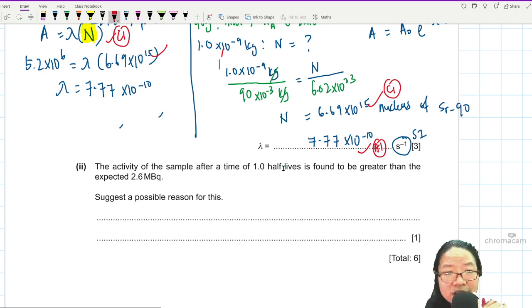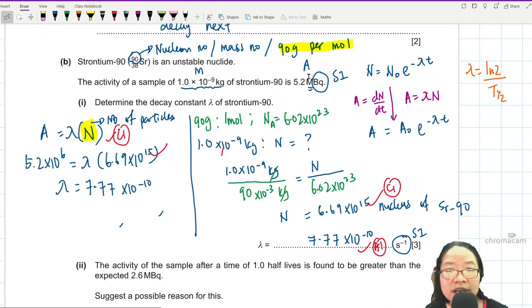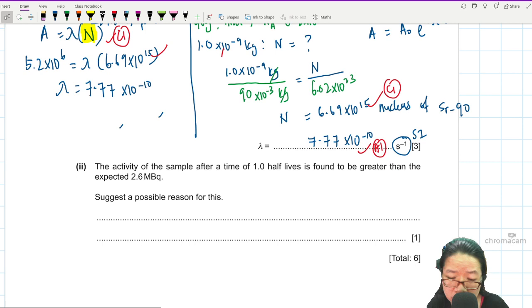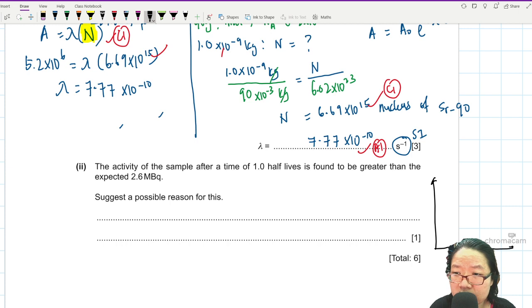Next part two. The activity of the sample after the time interval of one half-life is found to be greater than the expected 2.6 mega becquerel. So half-life means you should take 5.2 divided by 2 is 2.6. So if the conditions are perfect, let's say here is 5.2. I'm going to drop this way. When you drop to 2.6, here to here is one half-life. 2.6 divided by 2 is 1.3. When you drop to 1.3, here to here is another half-life.